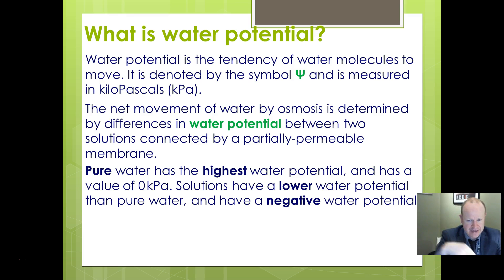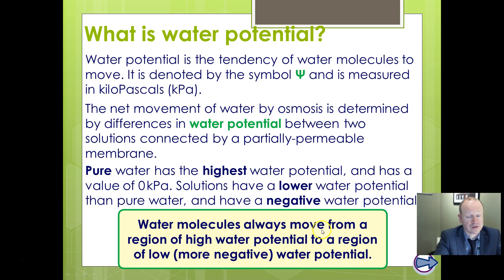It's better to say less negative and more negative than higher and lower. We're thinking about which one is more negative and which one is less negative - it helps to think about that way. So water molecules move from a region of high water potential to region of low water potential. Remember this will be down or with its concentration gradient and a passive process - no energy required because it's moving down its concentration gradient.